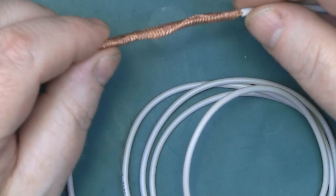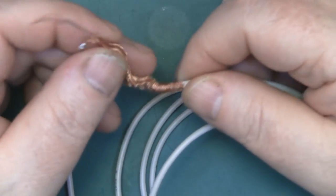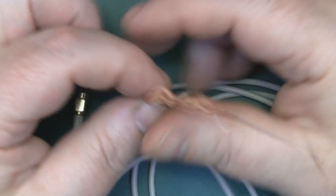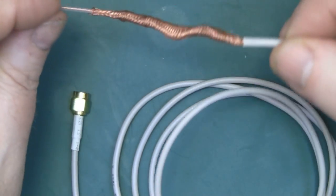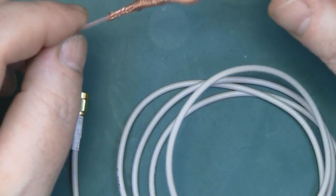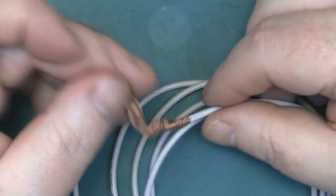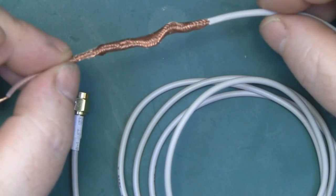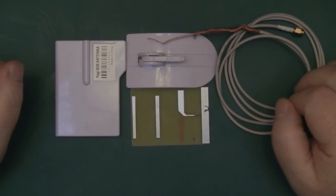Yeah, you can get a signal out of the Yagi as we've just seen, but if you use some proper quality coax with this little PCB then it'll probably do a lot better than it does with something like this.